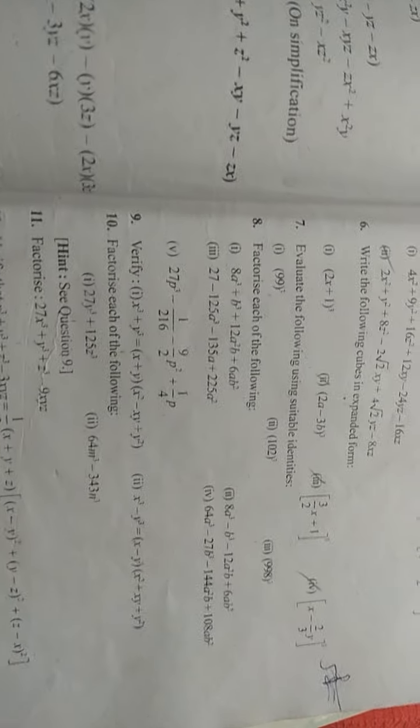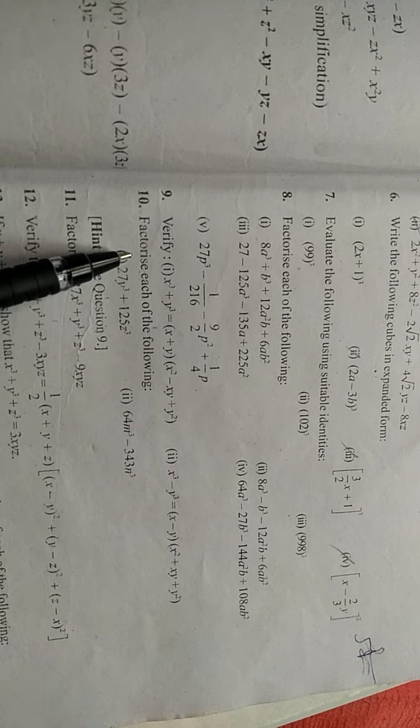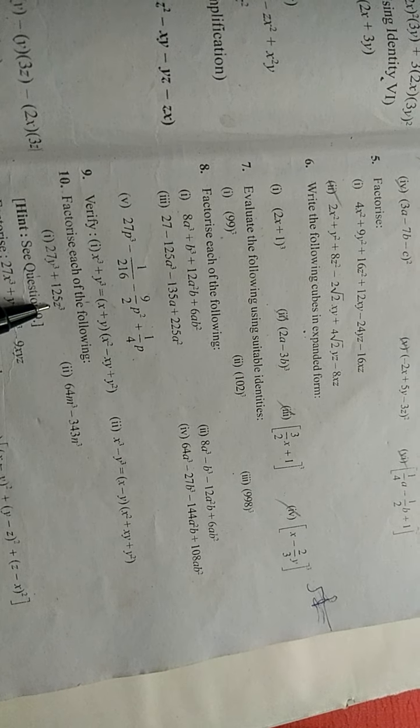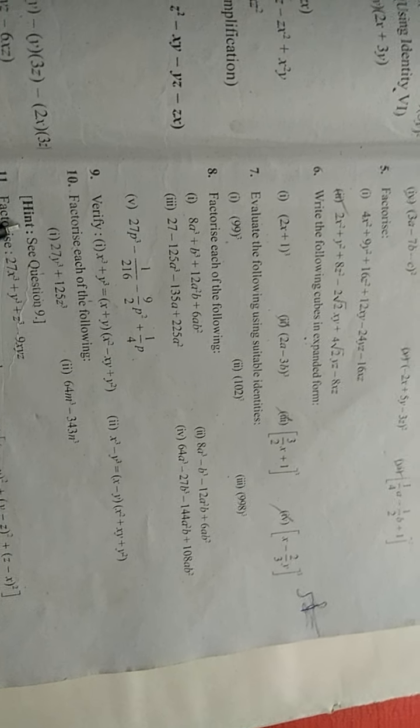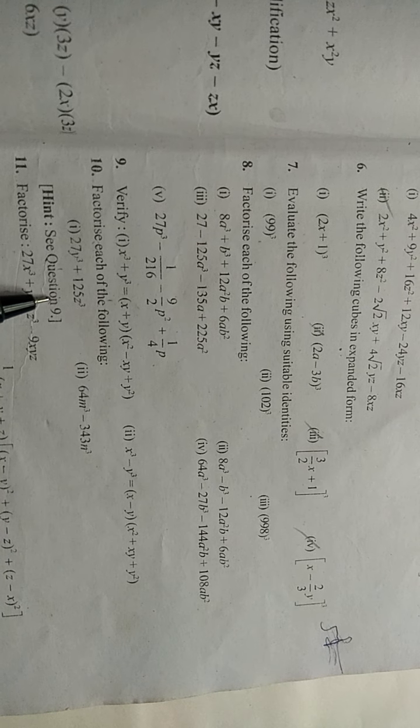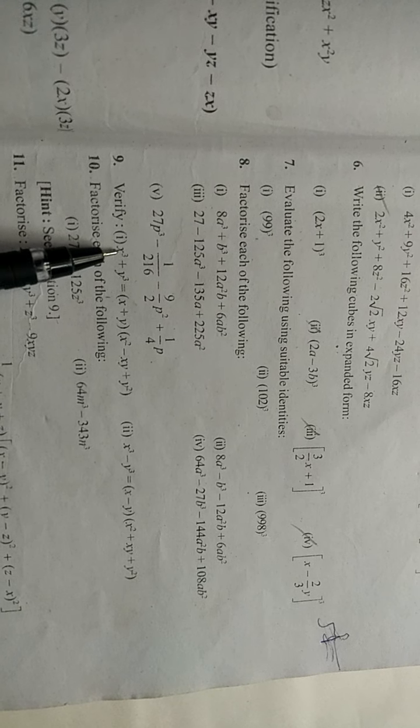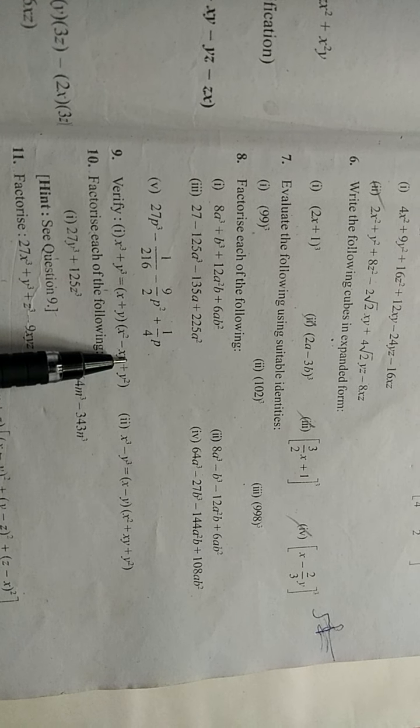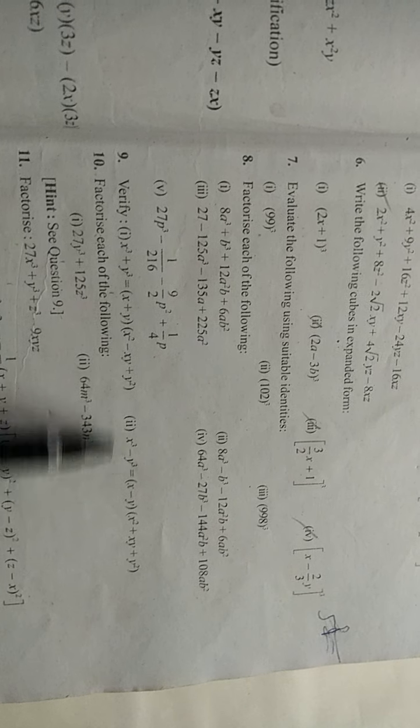Here you can see I have NCERT textbook, same question I taken: factorize each of the following: 27y cube plus 125z cube. They are given the hint that see question number 9. We can see in question number 9 we have got one identity we have proved that LHS and RHS equal in both questions.